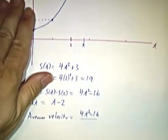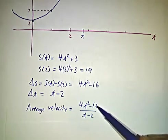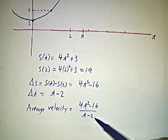So our average velocity is 4t squared minus 16 divided by t minus 2.